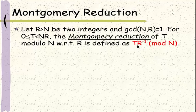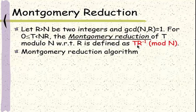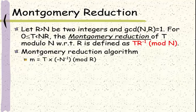From this definition, we see that the Montgomery reduction is nothing but a modular multiplication mod n. The following algorithm tells us there are other ways to compute this quantity. We start with a modular multiplication between t and the negative n inverse mod r, and we call this value m.